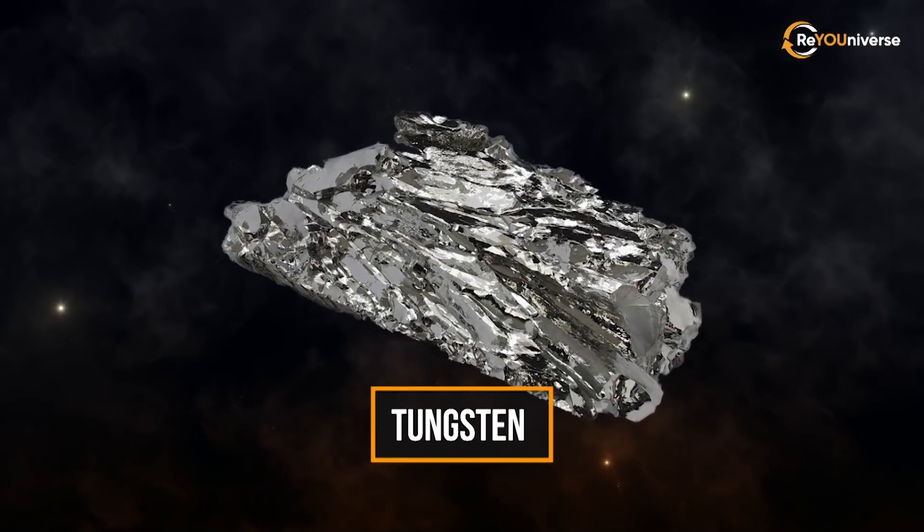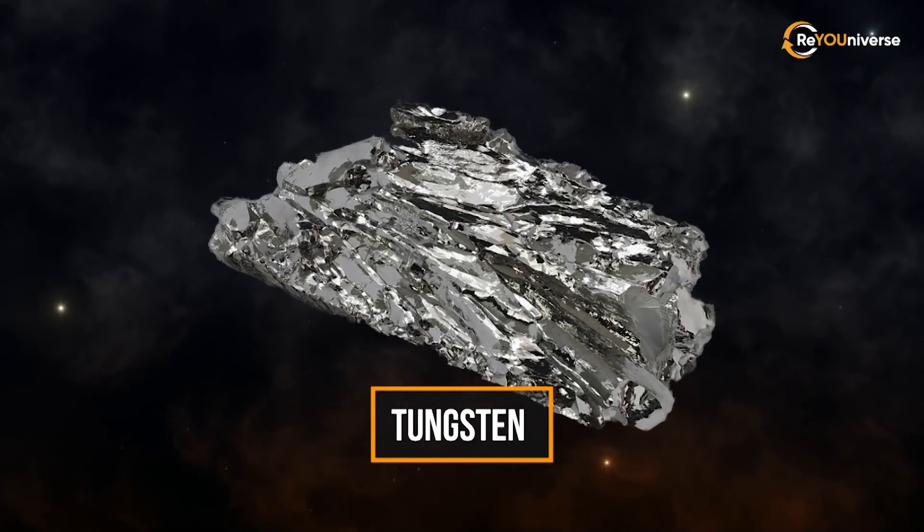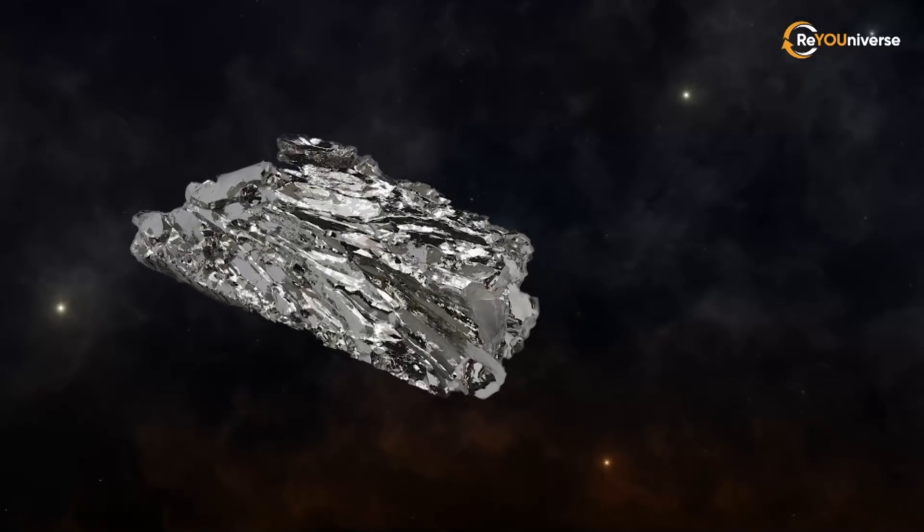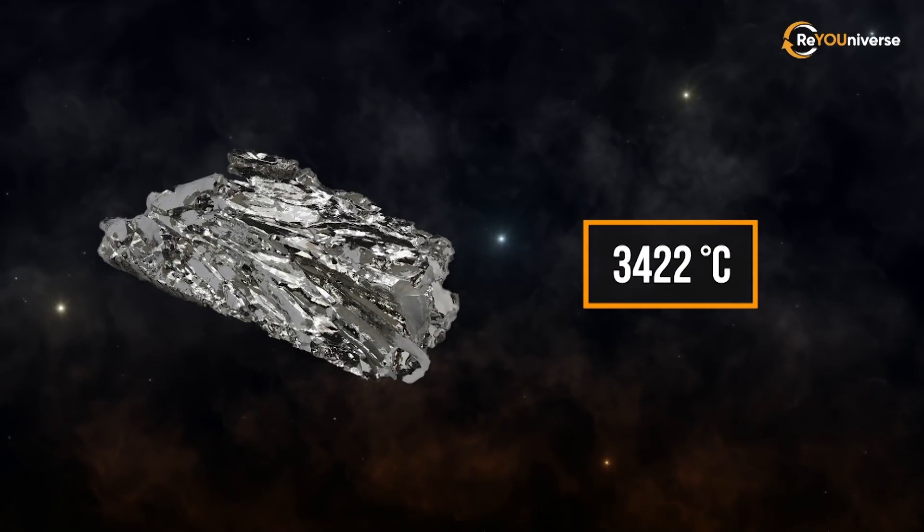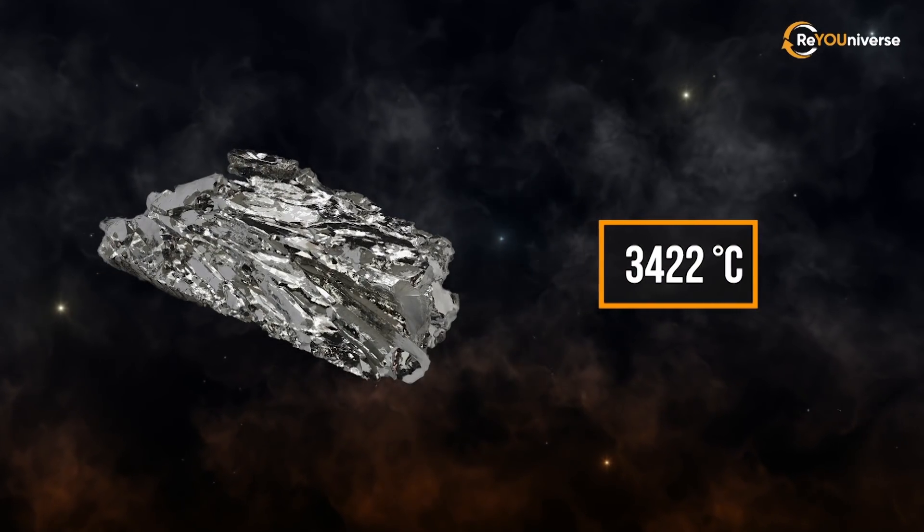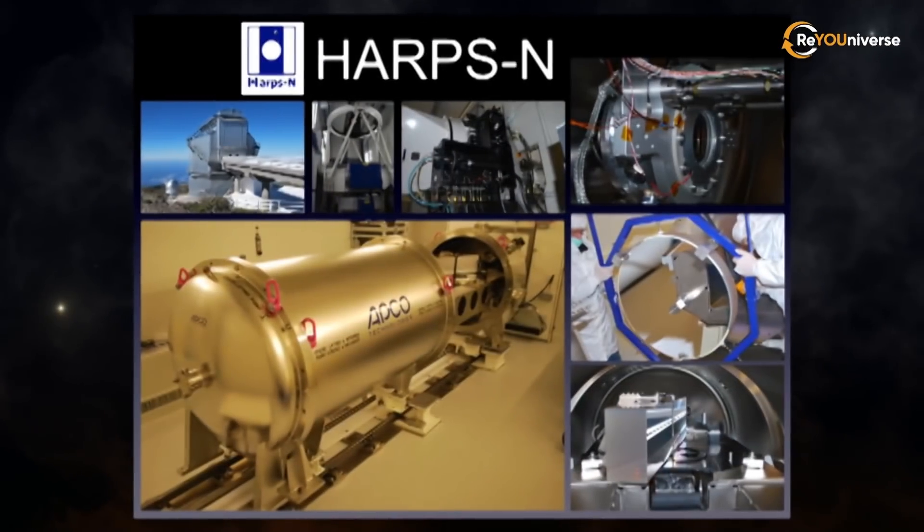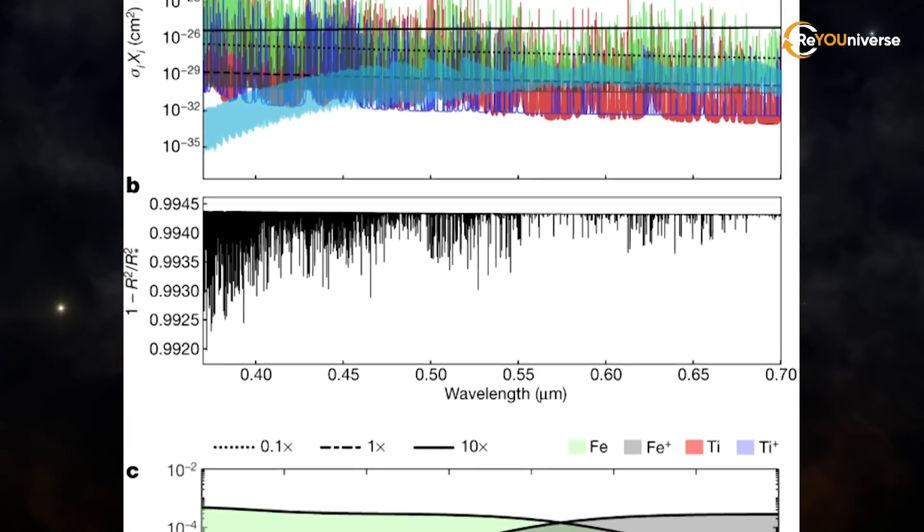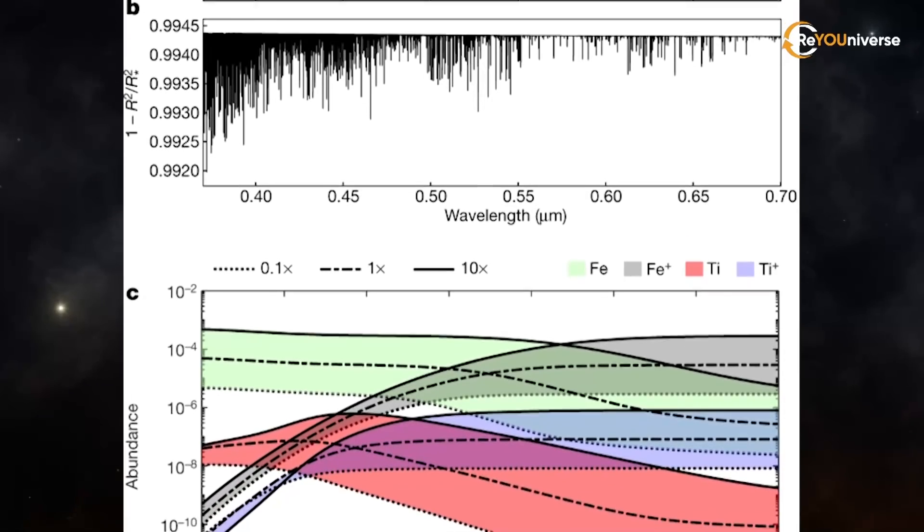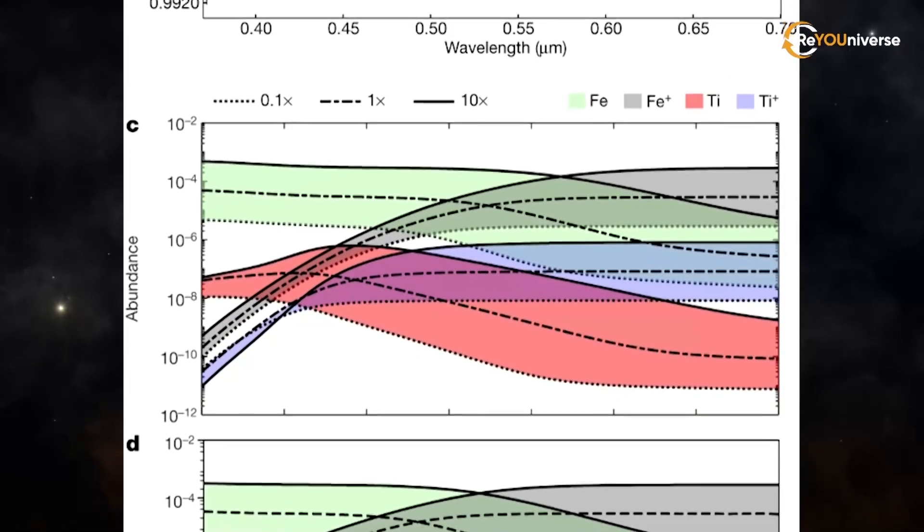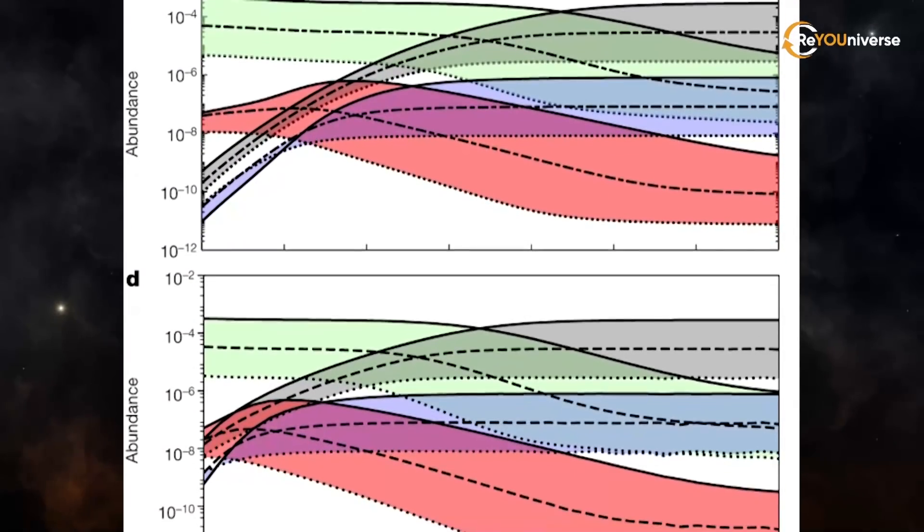Currently, tungsten is the most refractory metal known to us, with a whopping melting point of 3,422 degrees Celsius. Even this metal would melt on this planet. Using the Harp's north spectrograph, astronomers have found spectral lines corresponding to ionized iron and ionized titanium atoms.